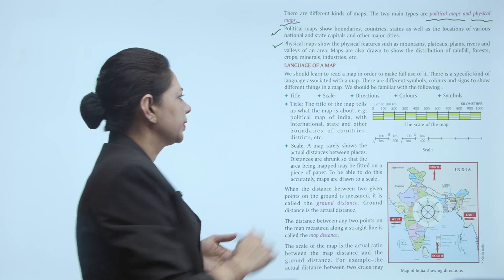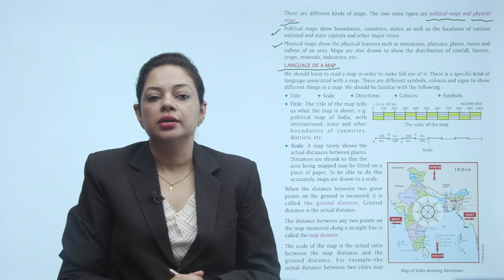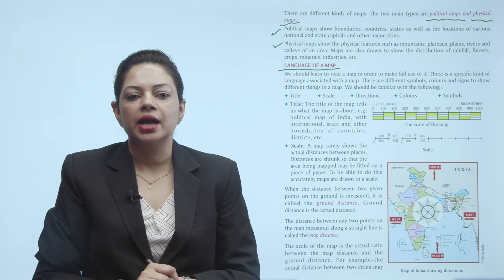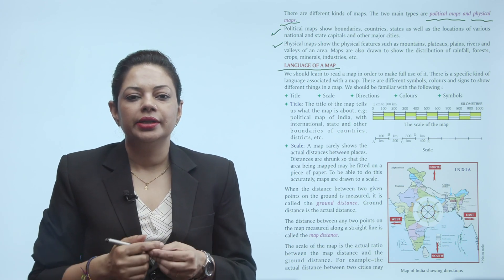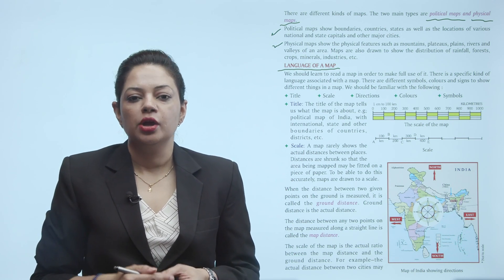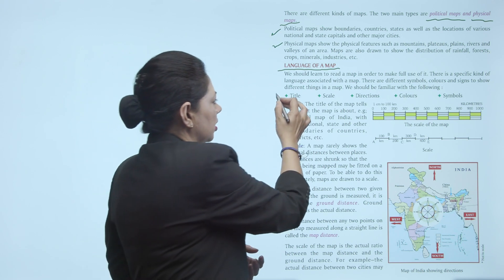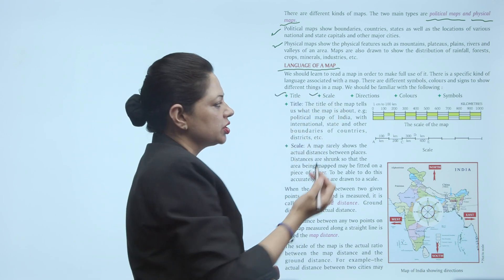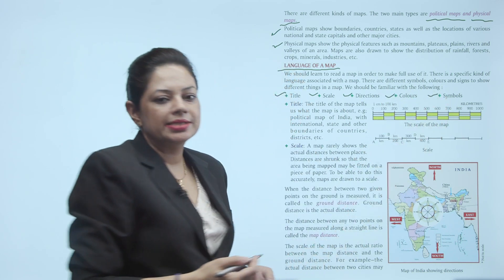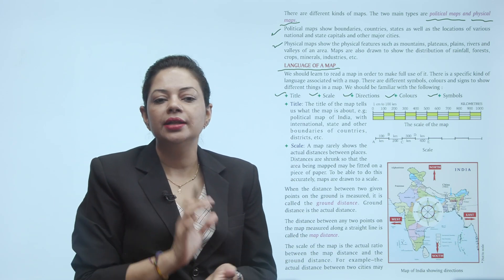Now, what is the language of a map? We should learn to read a map in order to make full use of it. There is a specific kind of language associated with the map — there are different symbols, colors and signs to show different things. We should be familiar with the following: first is title, second is scale, third is directions, fourth is colors, and fifth is symbols.